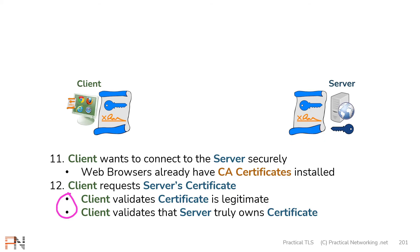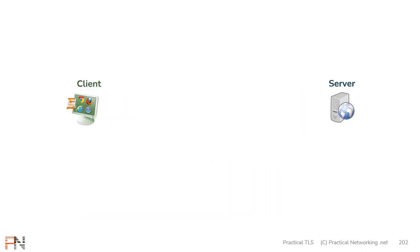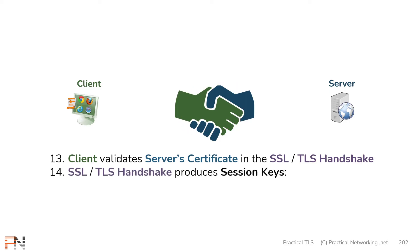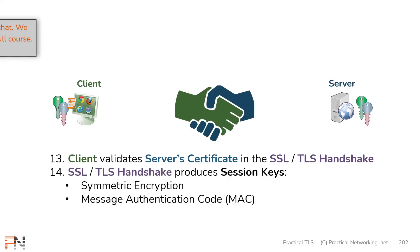Both of these items are validated in what's known as an SSL handshake. Within this handshake the client and the server exchange pieces of information which allow the client to verify the two items we just discussed. The handshake also allows the client and the server to establish cryptographic symmetric keys. The outcome of a successful handshake is the agreement upon session keys: one set of symmetric encryption keys to provide confidentiality, and one set of symmetric MAC keys to provide integrity and authentication.